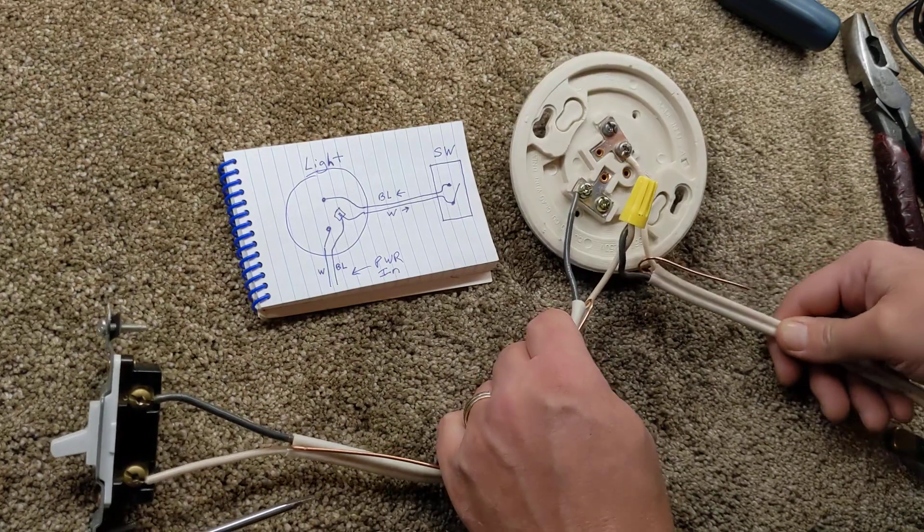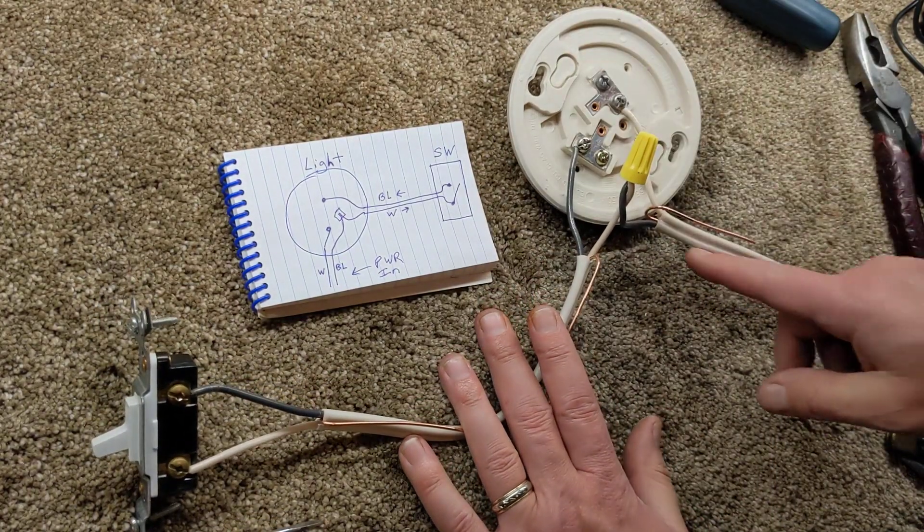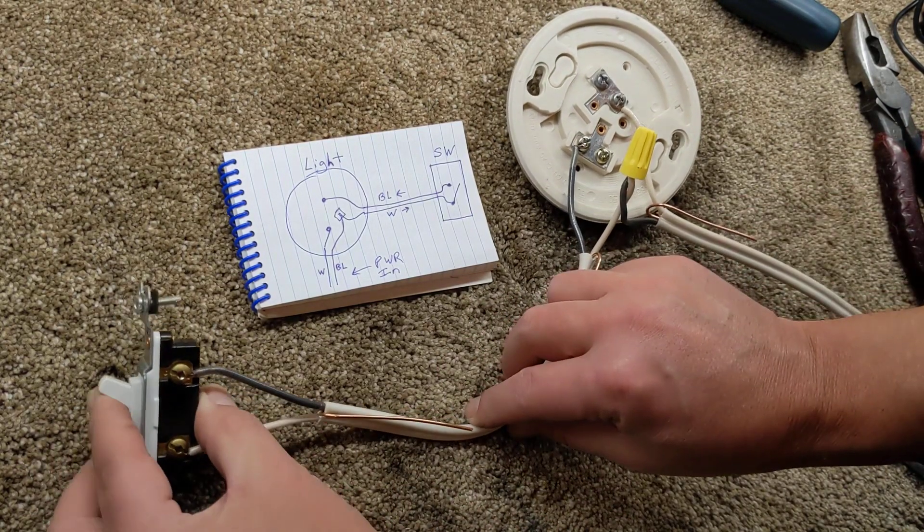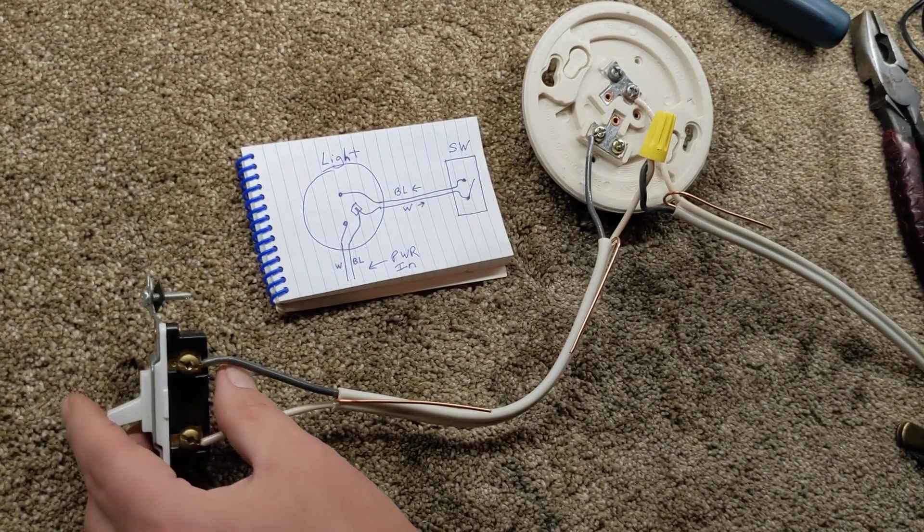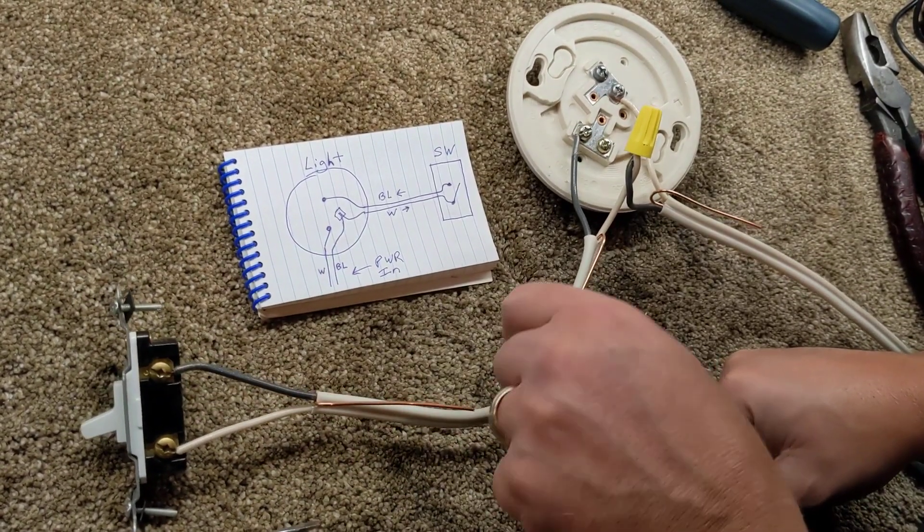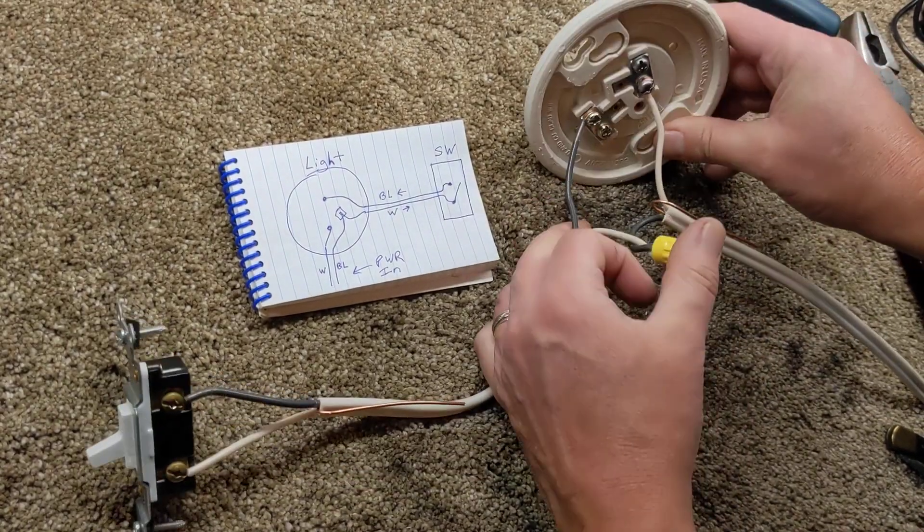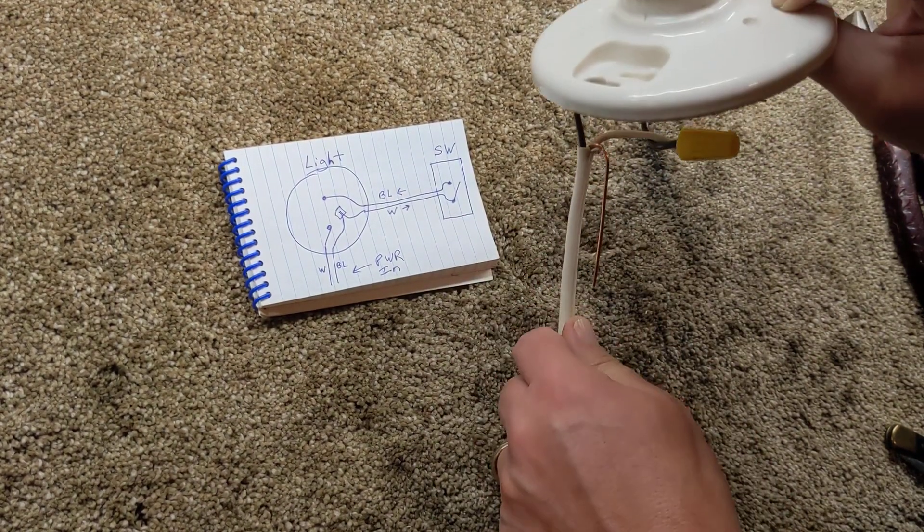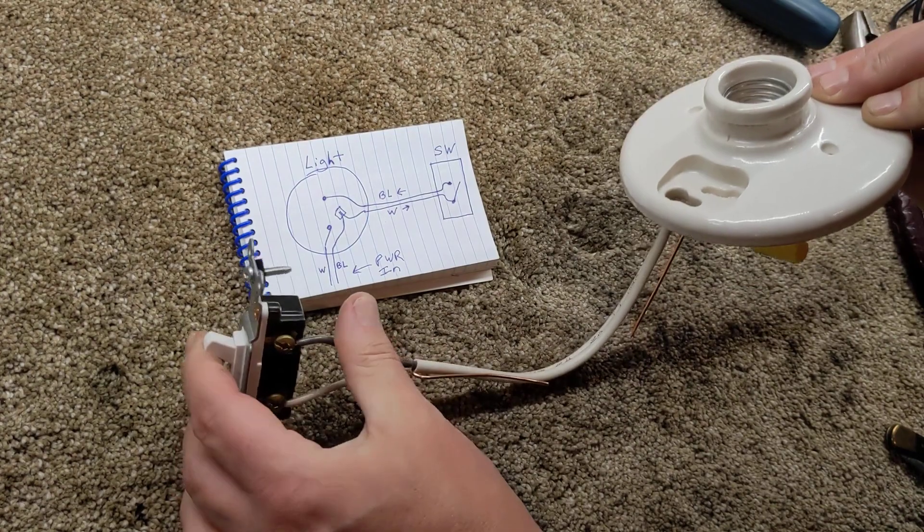So there we go. So now we have a switch leg. We have our regular switch. Power comes in, goes down. Our white is switched over here and then back on black. So these are the wires that are now hooked up to your switch. So you now have a switch leg installed on your light.